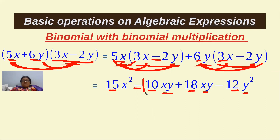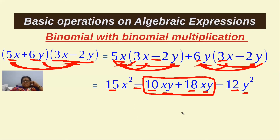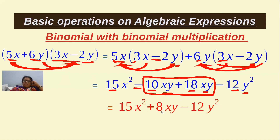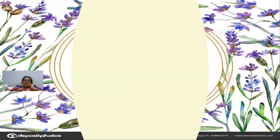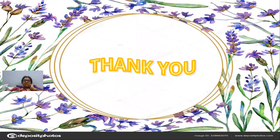The terms minus 10xy and plus 18xy are like terms, so we add them to get plus 8xy. The remaining terms 15x² and minus 12y² are unlike terms and cannot be combined. So the final answer is 15x² + 8xy − 12y². This is all about multiplication of different expressions. Thank you, students.